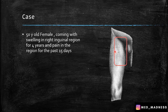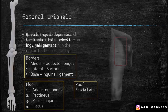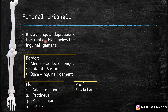Here you can see the femoral triangle. First, let us discuss about the boundaries, then the contents, and then go for the clinical anatomy. The femoral triangle is nothing but a triangular depression on the front of the thigh below the inguinal ligament.